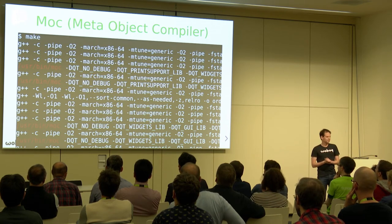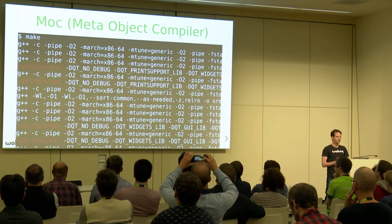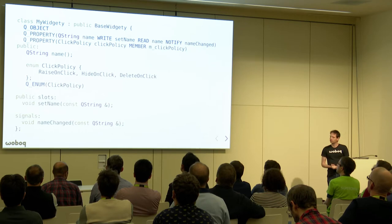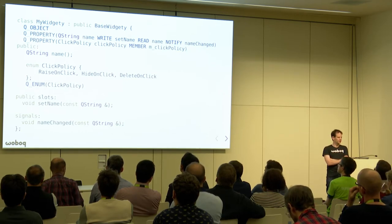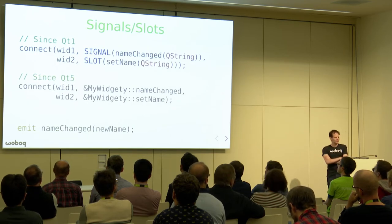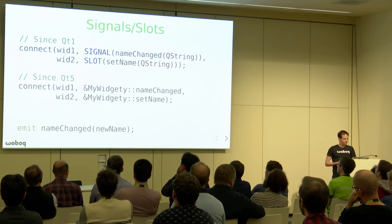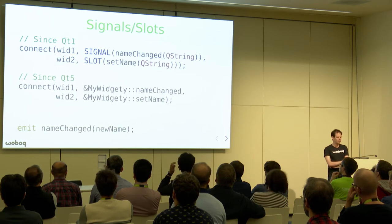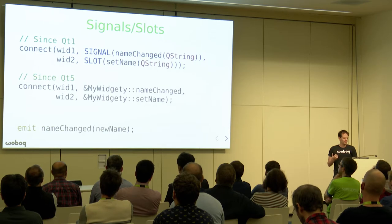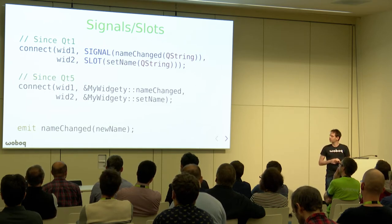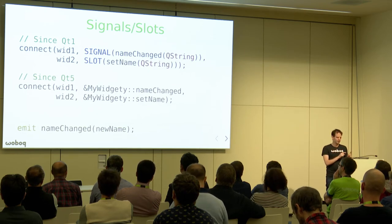MOC is a tool that runs as part of your build. When you build an application using Qt, it runs MOC behind the scenes. The purpose of MOC is to understand those Qt macros you add into your object class. Signals and slots, for example, are powered by MOC. The Qt1 signal and slot macros use uppercase macros that change their arguments to strings, and MOC looks up indices from those strings. With Qt5 syntax, you still need MOC because it needs to look up the signal index from the function pointer.